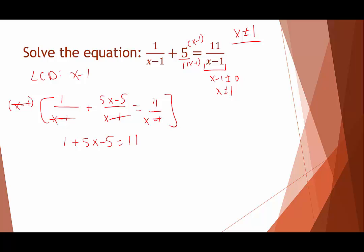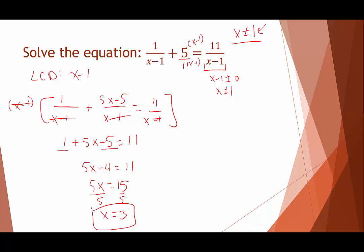This is a linear equation, so we isolate x. Combining constants: 1 minus 5 gives minus 4, so 5x minus 4 equals 11. Adding 4 to both sides gives 5x equals 15, and dividing by 5 gives x equals 3. Checking: 3 does not equal 1, so x equals 3 is indeed in the domain and is our solution.